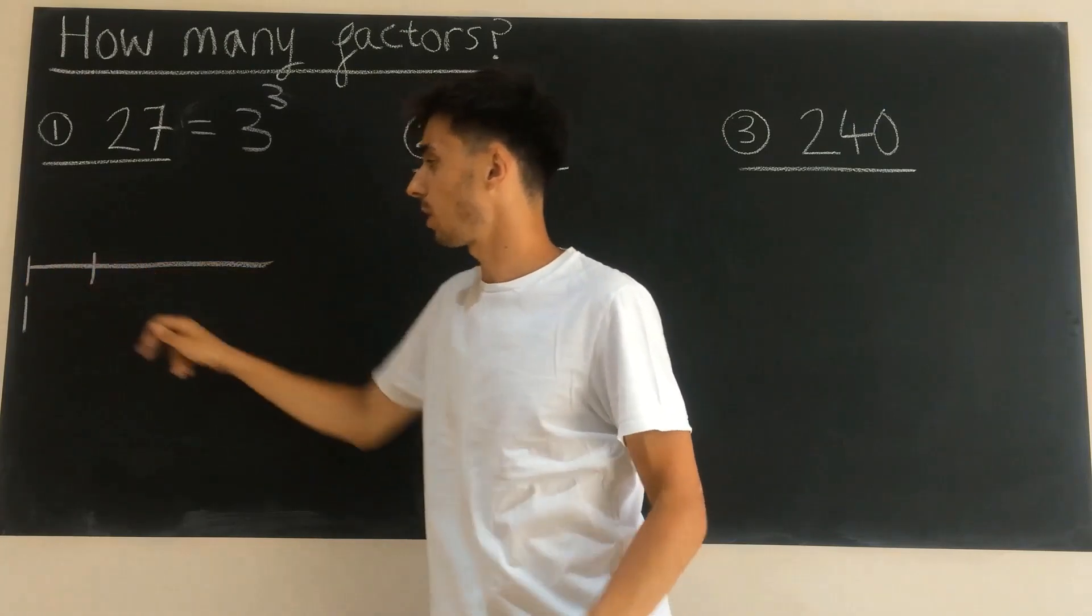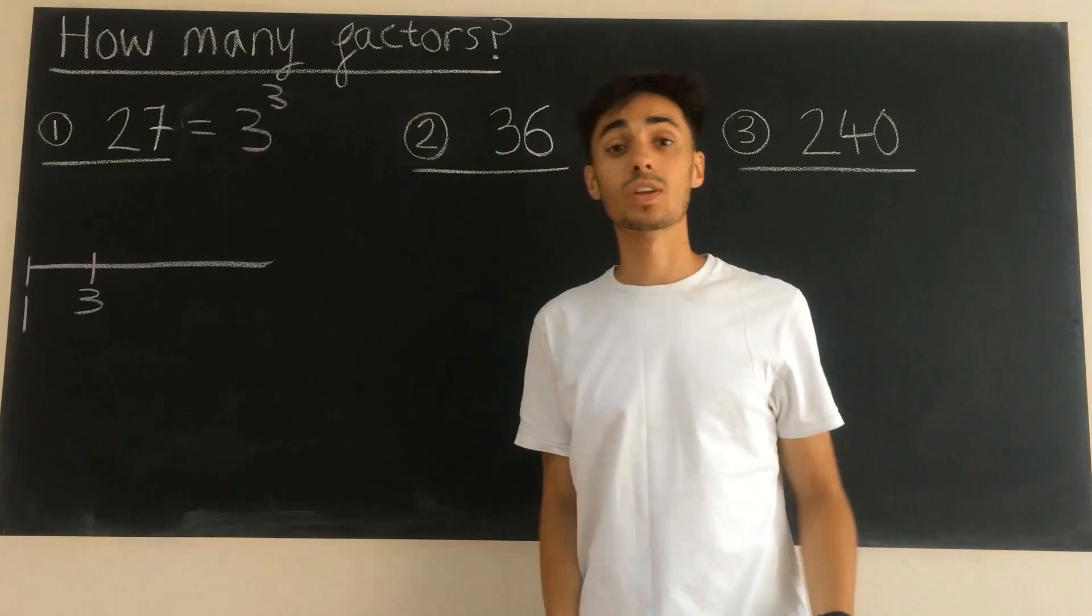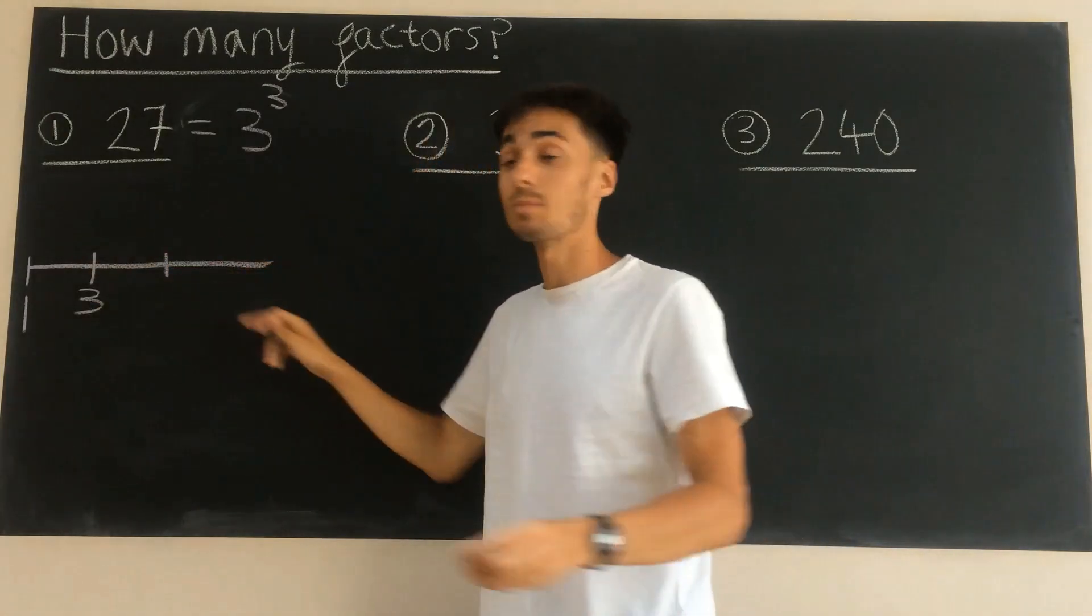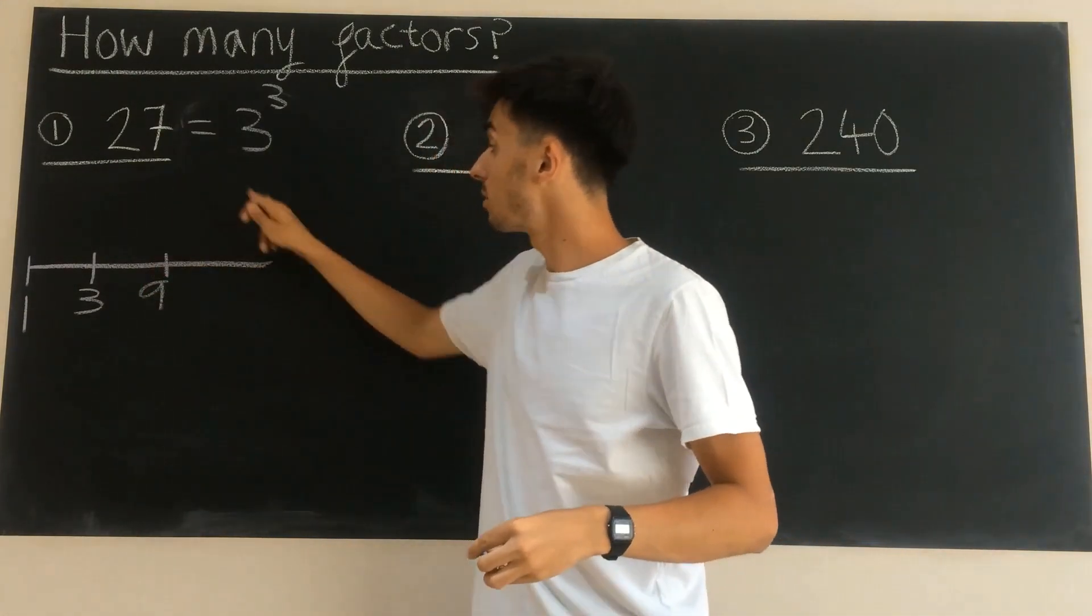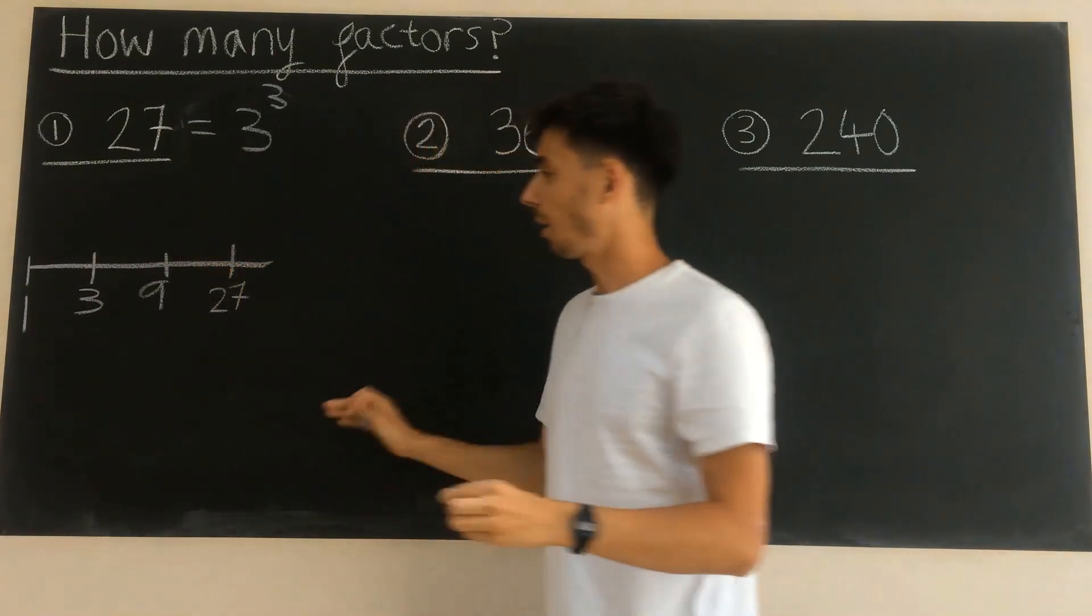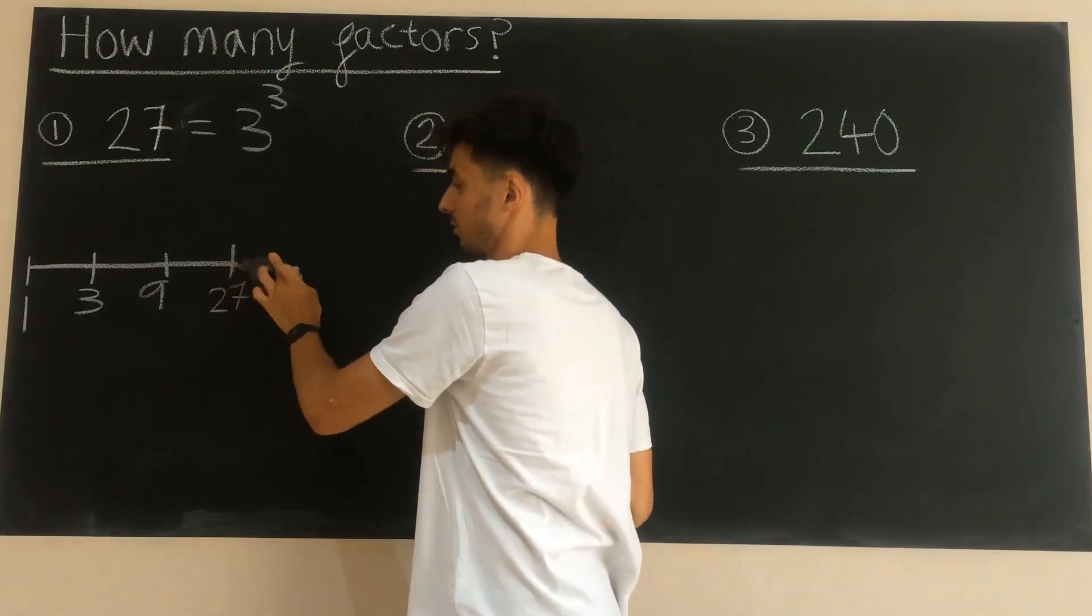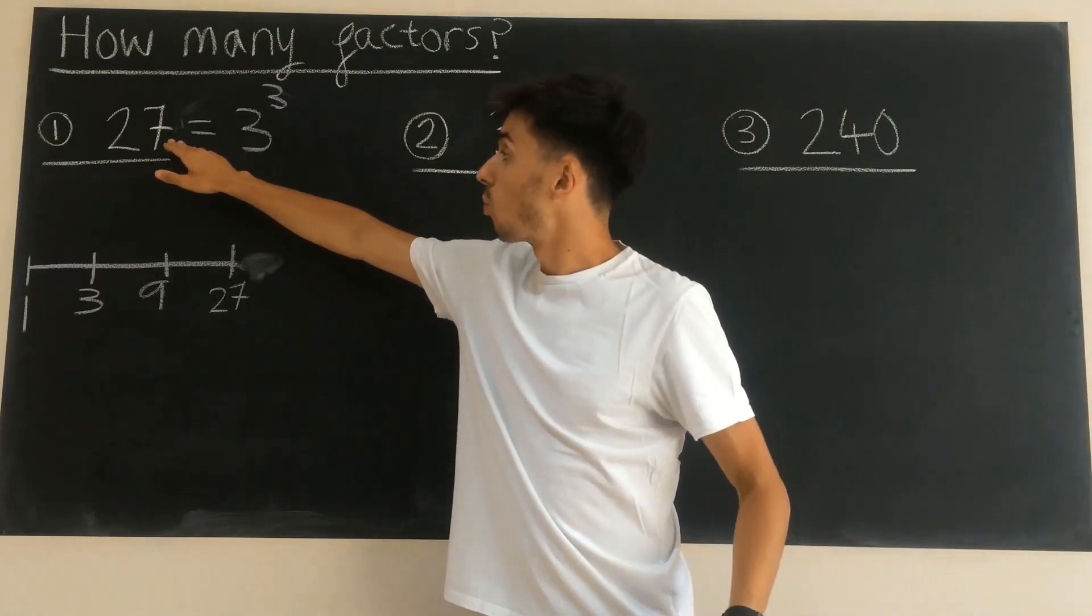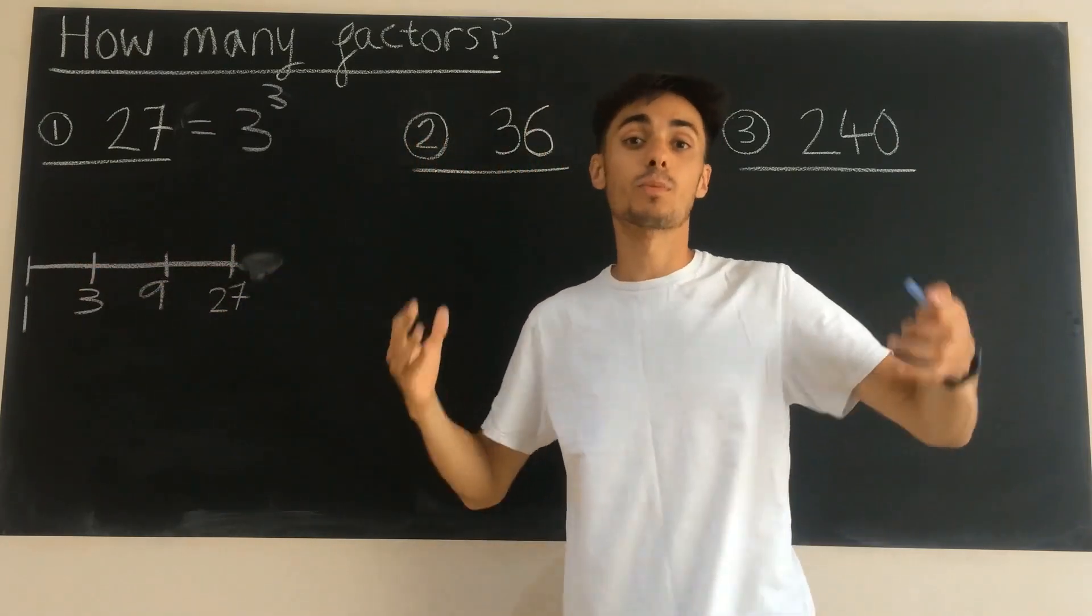So one jump we're going to do 1 multiplied by 3 to get to 3. The next jump on our number line we need to do 3 multiplied by 3 to get 9. And the next jump we need to do 9 multiplied by 3 to get to 27. So what we've seen here is to get from 1 to 27 we have to multiply 1 by 3, 3 times.